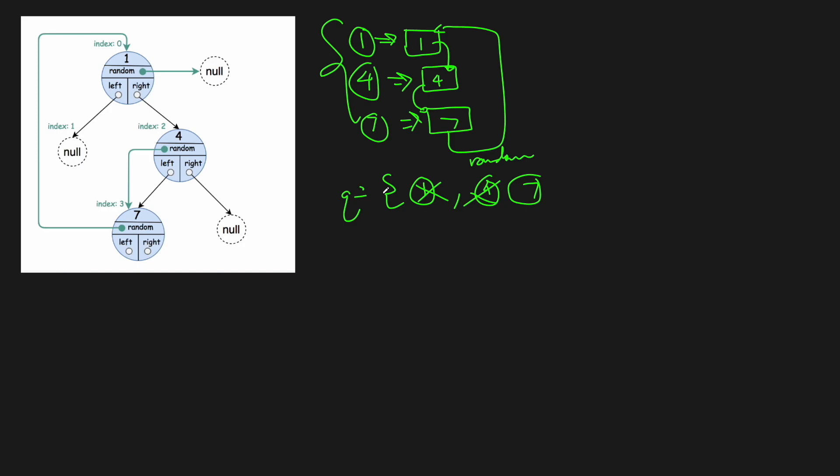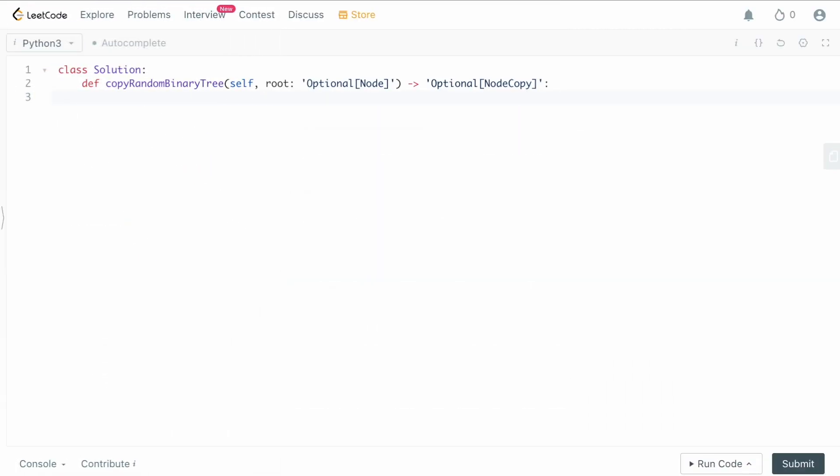We have a dictionary which stores our copied values, and we use a BFS to iterate through the tree and copy things as we go, ensuring each node in the copy is linked the same way as in the original tree. Let's type this out in the code editor — it's really simple and straightforward.